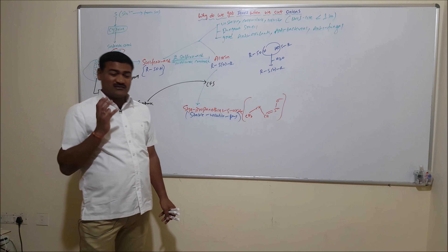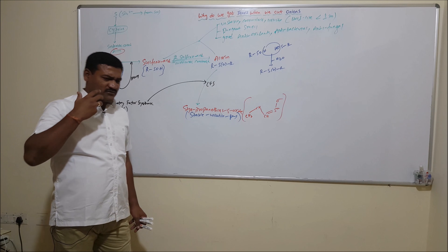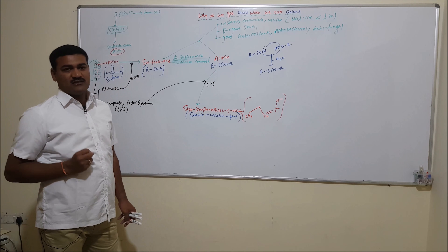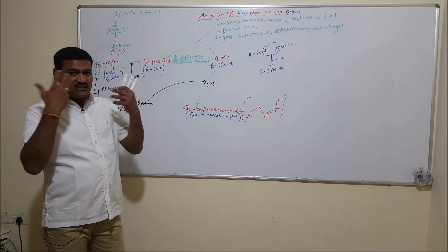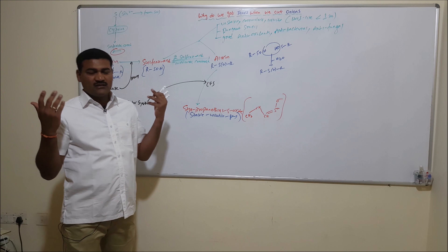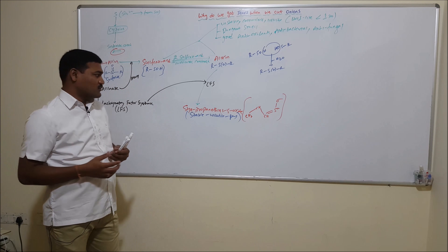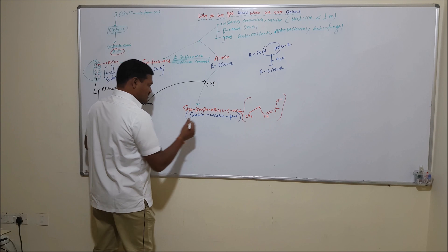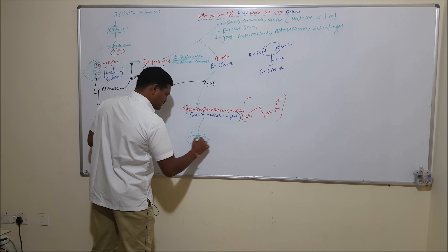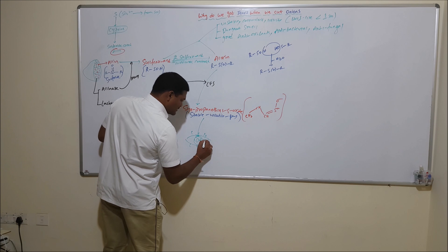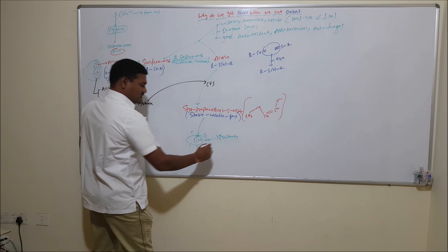Sulfenic acid and allicin are unstable liquids, but syn-propanethial S-oxide is a stable volatile gas. As soon as this gas is formed, it is released out of the onion bulb. Within half a minute, a lot of gas accumulates in the atmosphere and slowly reaches the eyeball, where it reacts with the water in the tears. When this gas reacts with the water in the tears, it forms irritating compounds such as sulfuric acid, which cause irritation to the sensory nerve fibers in the eyeball, resulting in a painful stinging and burning sensation.